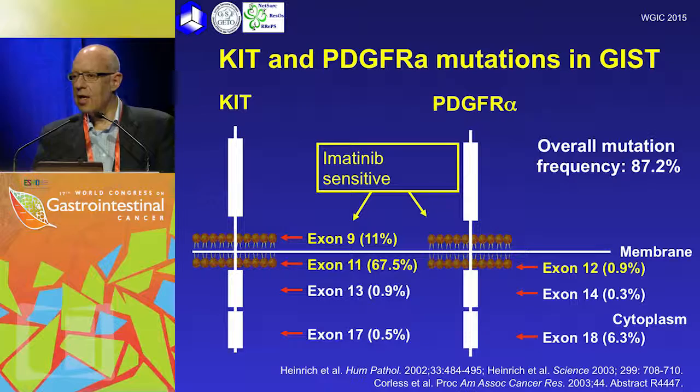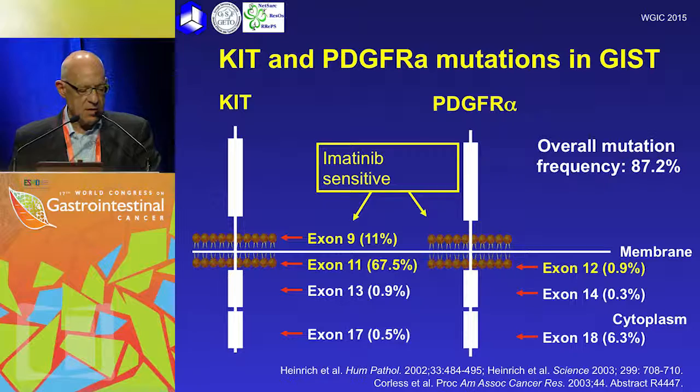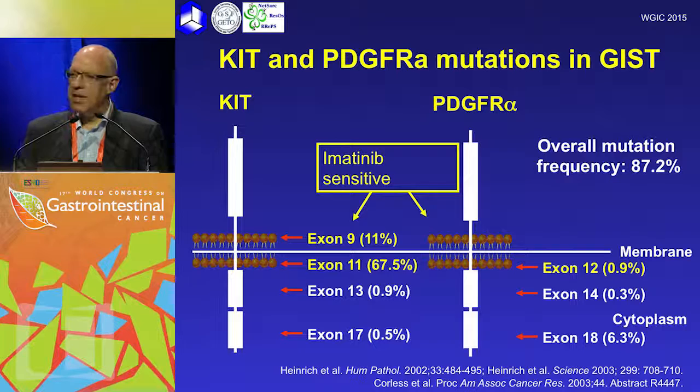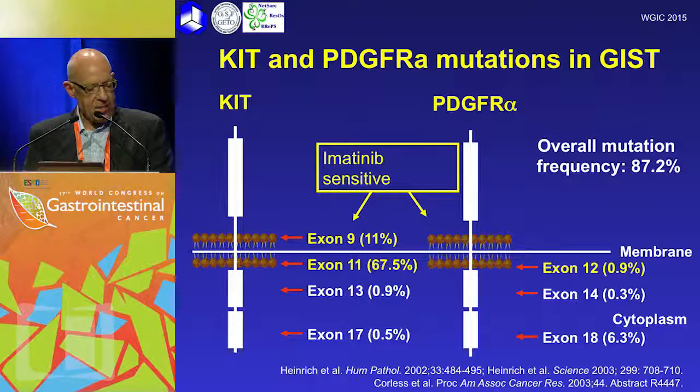Here's the cartoon that illustrates the various mutations that are seen. On the left, the KIT mutations: exon 11 are the commonest mutations, but exon 9 are important from a treatment perspective, and both are relatively sensitive — more so exon 11 — to imatinib. With respect to PDGF receptor alpha, the common mutation is the exon 18 mutation, which is relatively resistant to imatinib, as you'll see later on.